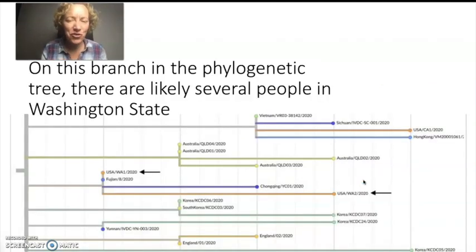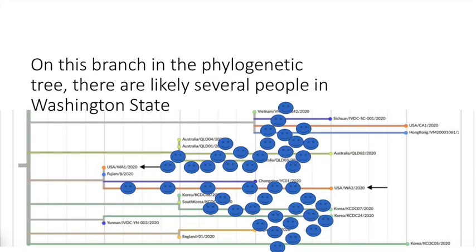So let's go back to the phylogenetic tree that was shown in the original tweet. And so here again, we have the WA2 case and the WA1 case. So if there was ongoing transmission in Washington, then several people must have been infected along the way. And because this virus is quite infectious, if there's five people infected, likely there's a lot more because each of them would have likely infected two or three people.